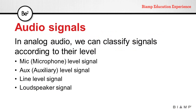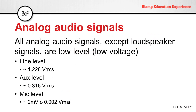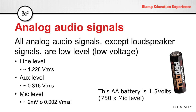In audio, we can classify analog signals by their level. We can have mic level, aux level, line level, and loudspeaker level. All of these signals are low voltage with the exception of loudspeaker levels. Line levels are usually in the range of 1.3 volts RMS. Auxiliary levels are much lower at 0.3 volts RMS, and mic levels are even lower at 2 millivolts or 0.002 volts RMS. To put it in perspective, a AA battery is 1.5 volts — 750 times the level of a microphone signal.